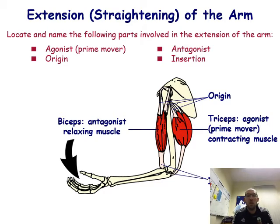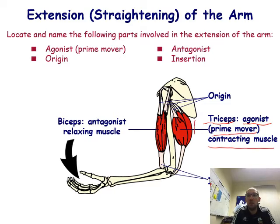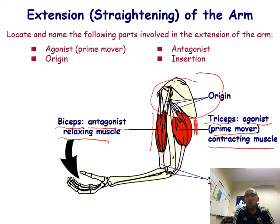When straightening the arm, the tricep becomes the agonist or prime mover — it's contracting, getting shorter and fatter. The bicep becomes the antagonist, relaxing and getting longer and thinner. The roles have switched, but the origin and insertion don't change: there's still no movement at the shoulder, so that remains the origin, and the movement still occurs in the forearm, so that remains the insertion.